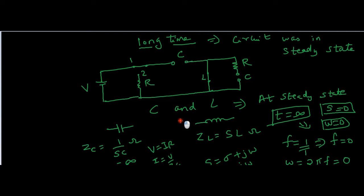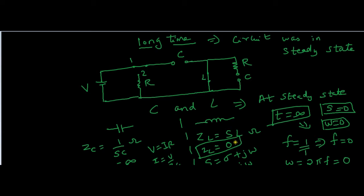In the same fashion, the impedance of the inductor is SL. Since S is 0 here, the impedance is 0. If the impedance of any circuit element is 0, we represent it as a short circuit. So we have represented the circuit accordingly at steady state.